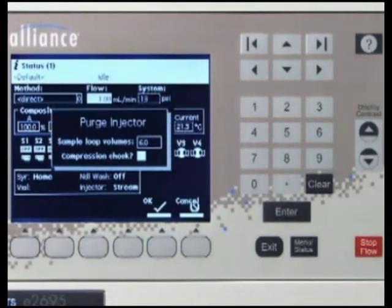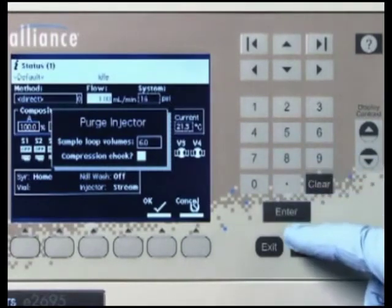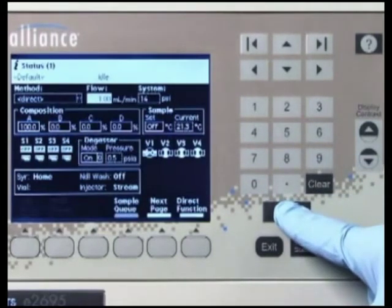To check for air bubbles in the syringe, select the compression test checkbox to perform a compression test. Finally, press OK to start the purge cycle.